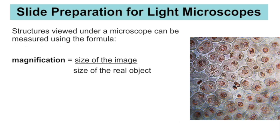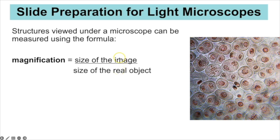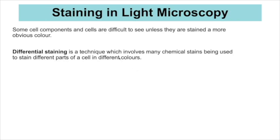The magnification calculation applies to both light and electron microscopes. Magnification equals the size of the image divided by the size of the real object. You may need to rearrange the formula, and there is usually a unit conversion involved — the image is measured in millimetres and the real object in micrometres, so you multiply millimetres by 1000 to convert to micrometres.